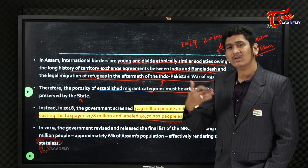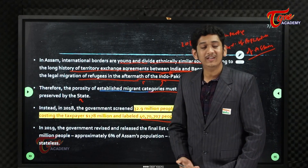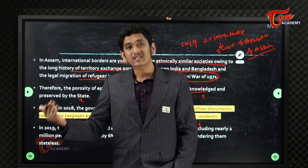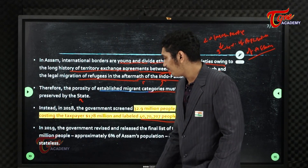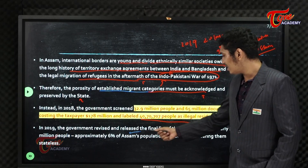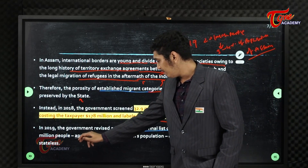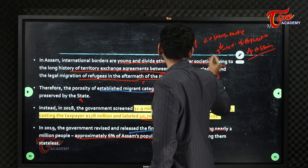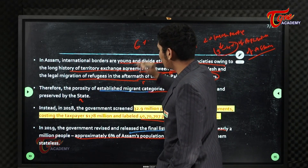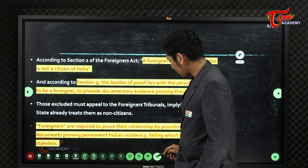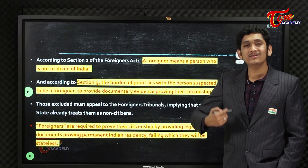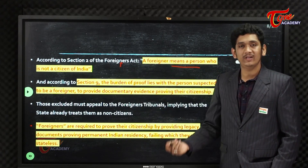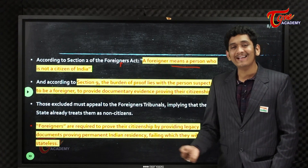In NRC, we also need to consider the children of detained people who have been living here for 20 to 30 years. In 2019, the government revised and released the final list of NRC, excluding nearly 2 million people — approximately 6% of the population — effectively rendering them stateless. According to Section 2 of the Foreigners Act, a foreigner is a person who is not a citizen of India. We declare them as foreigners, and the status of illegal migrant is given by the Foreigners Tribunal.